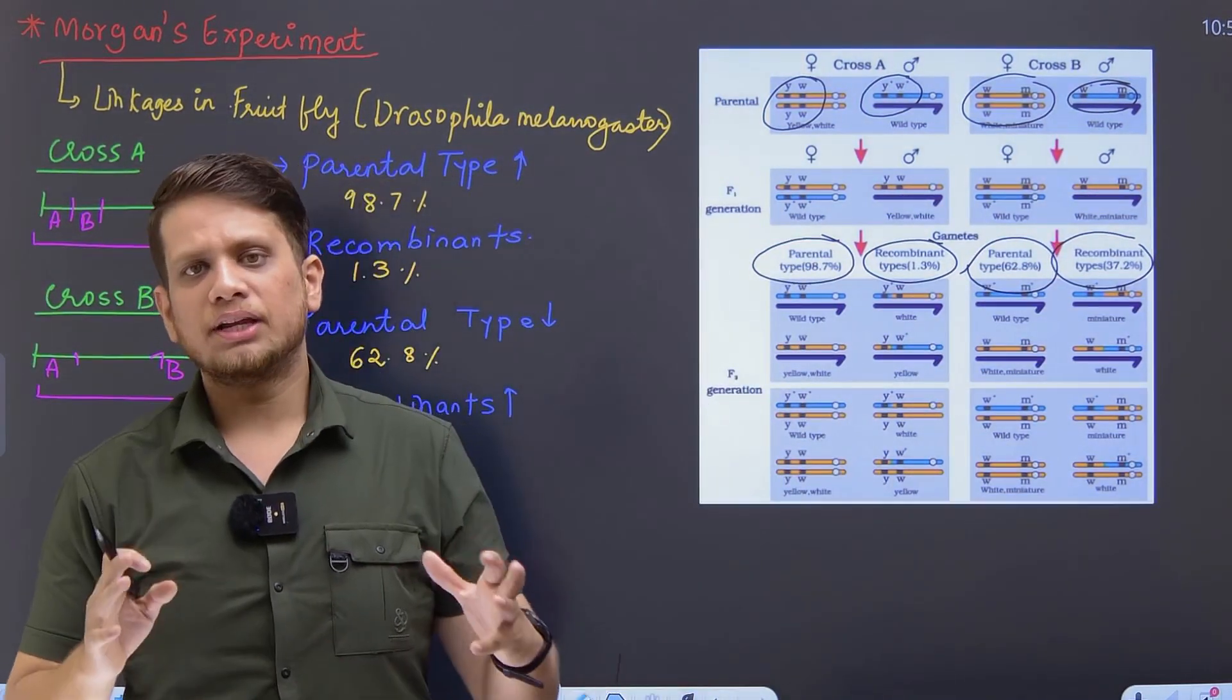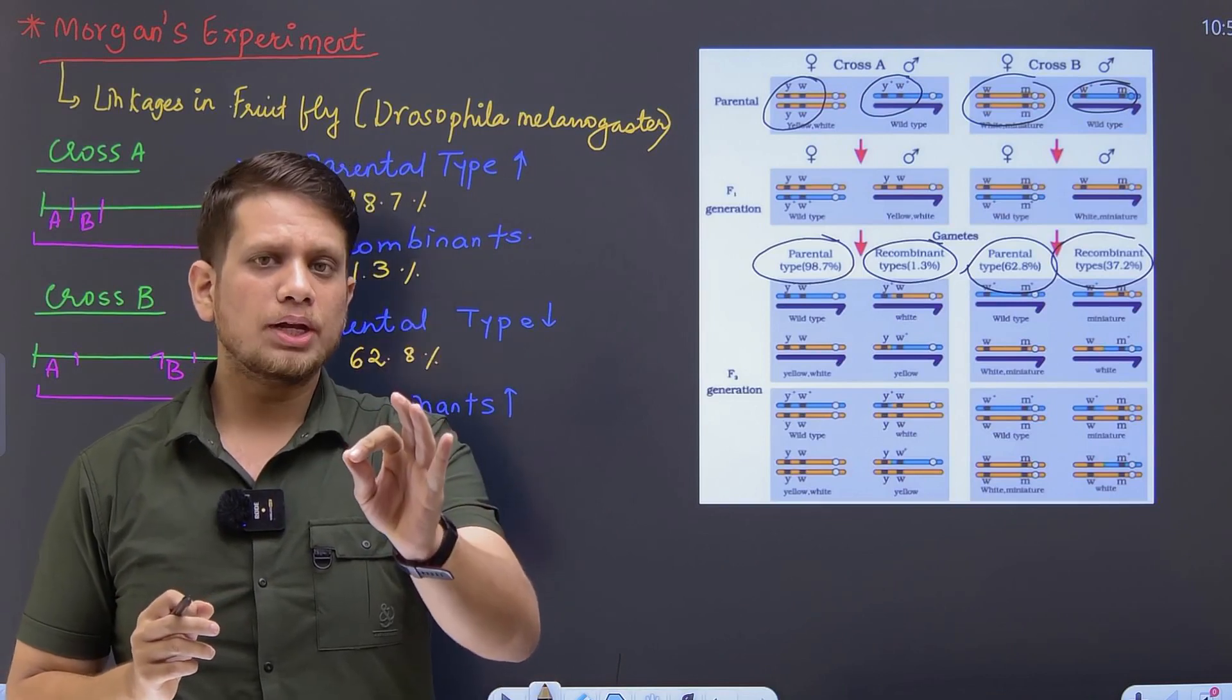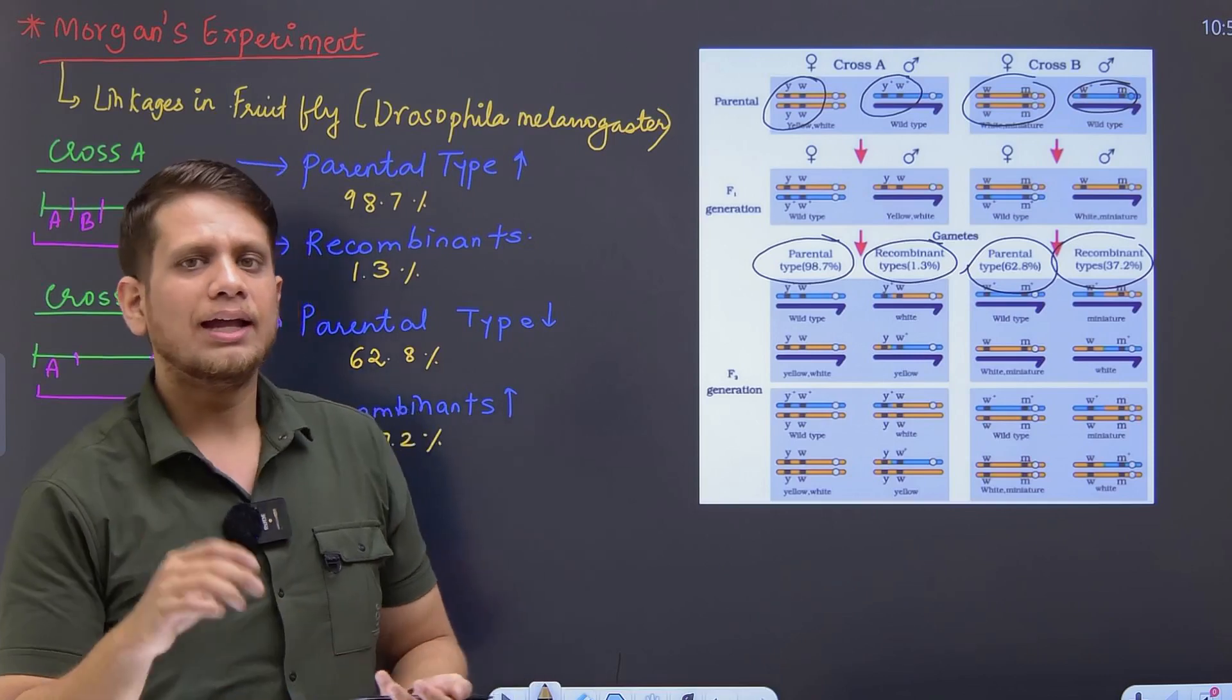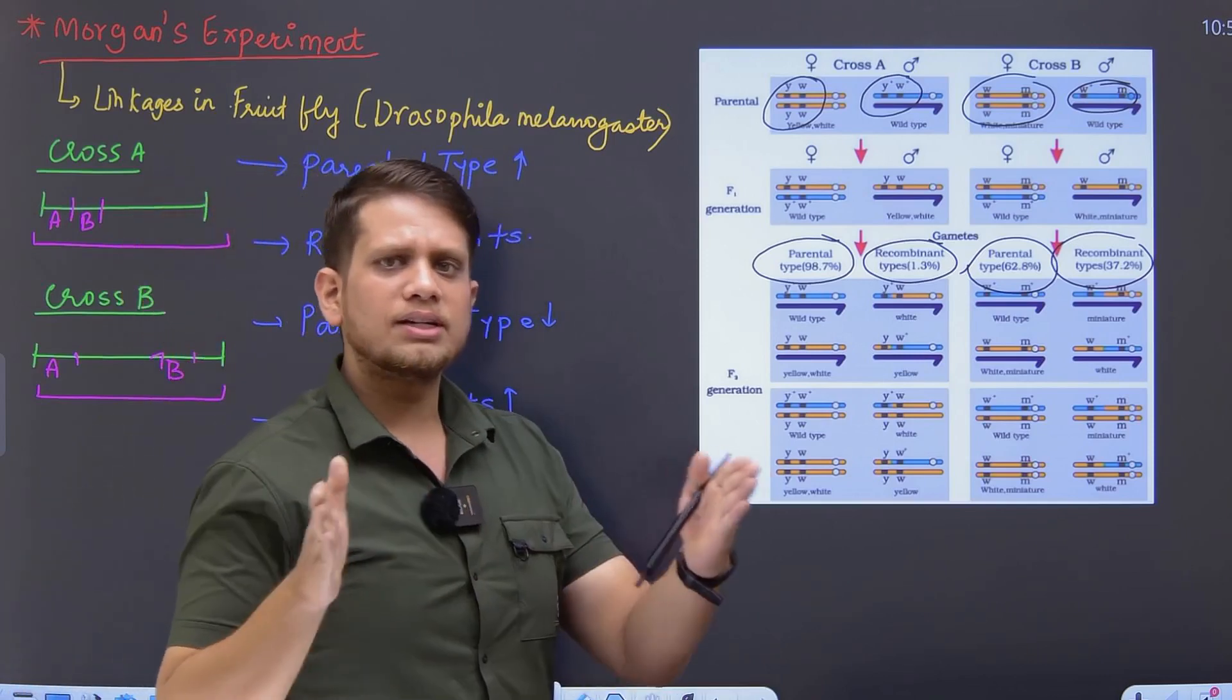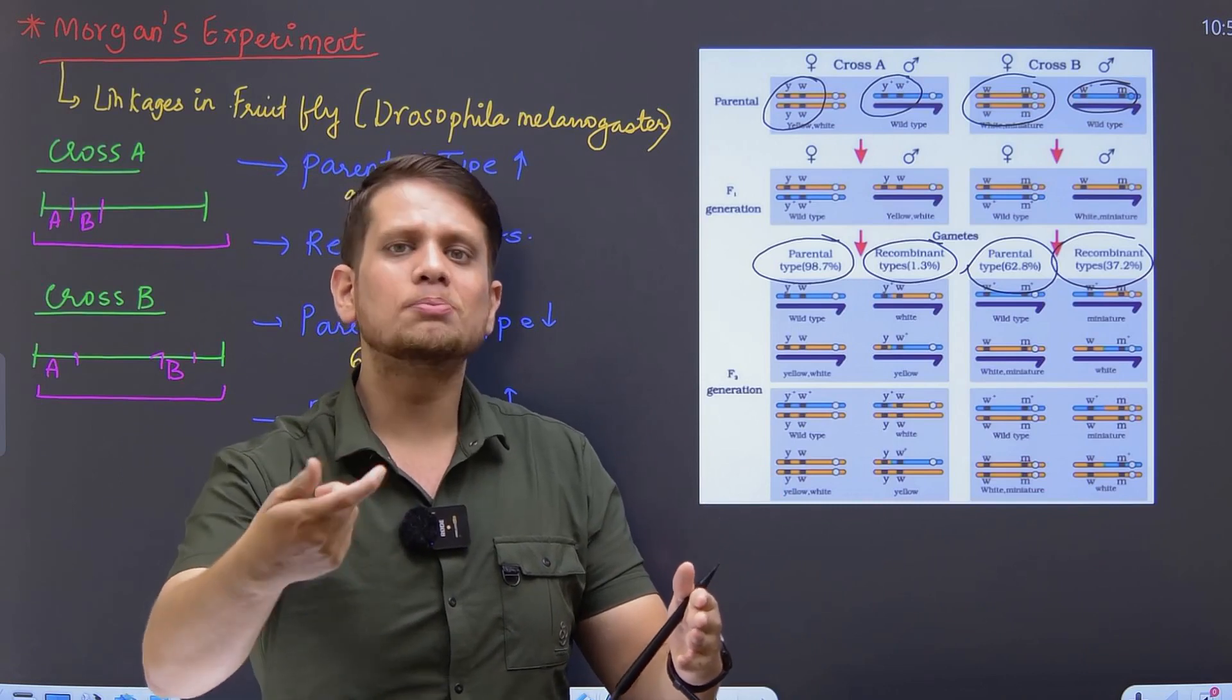When the genes are very, very close in association, the parental combination tends to be on the higher side as compared to the recombinants. And when we talk about the genes which are very distant, far-far placed, then the chances of crossing over increases.